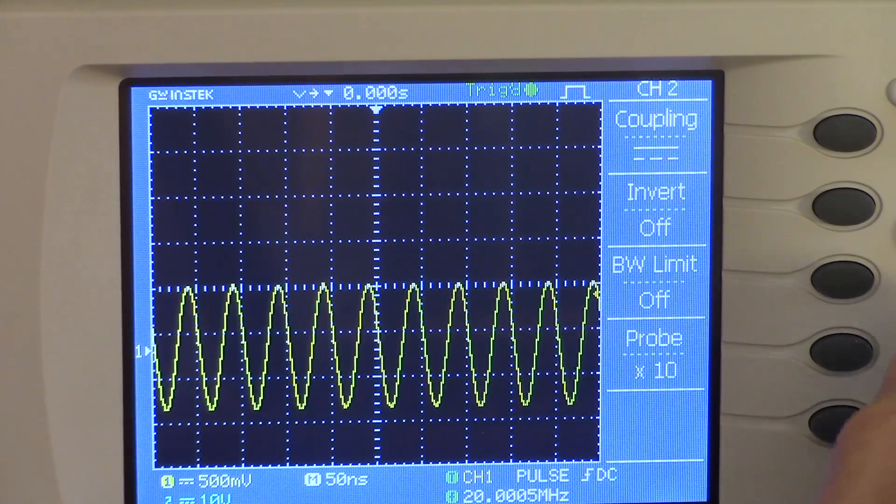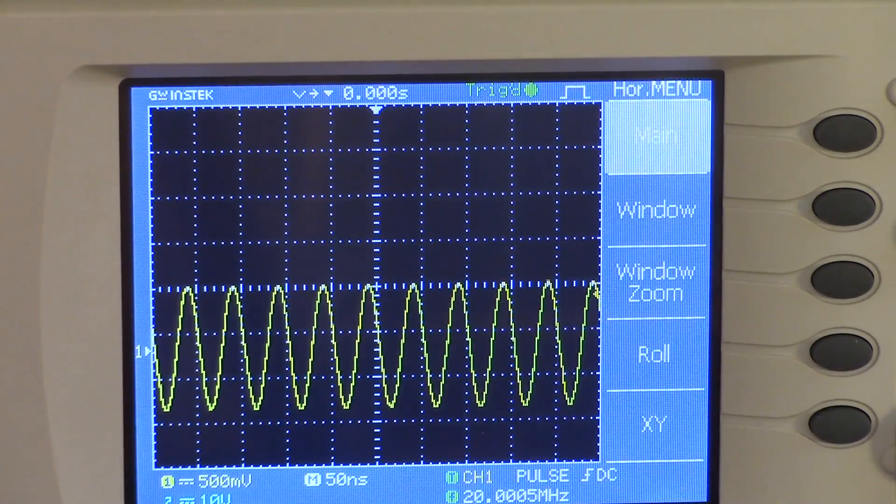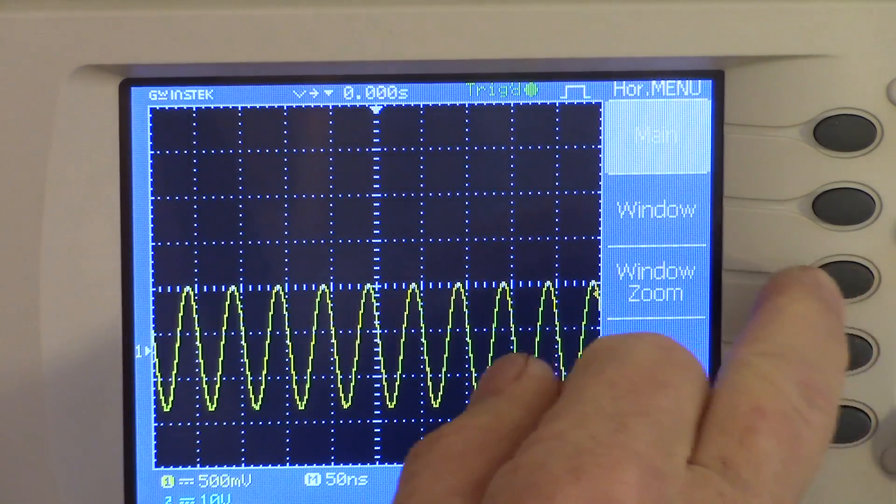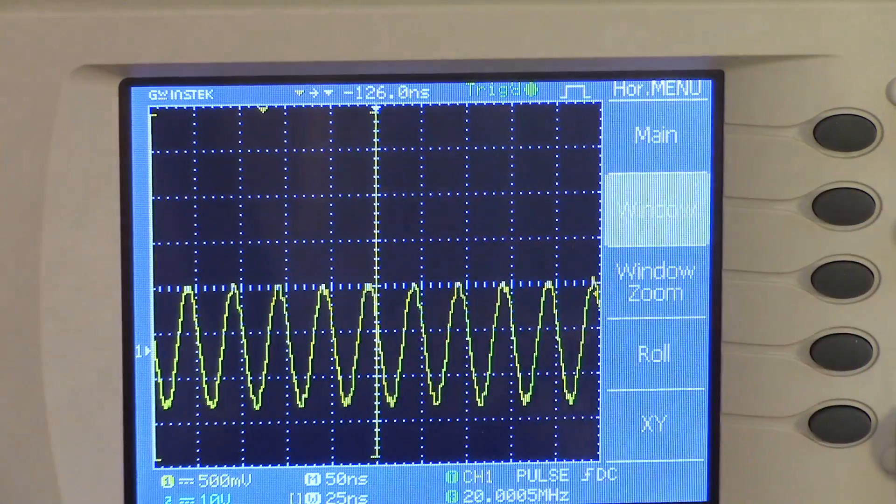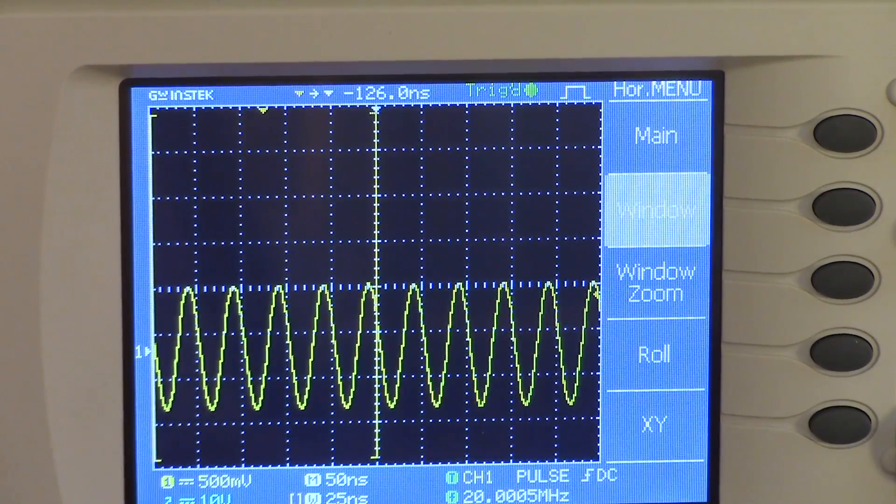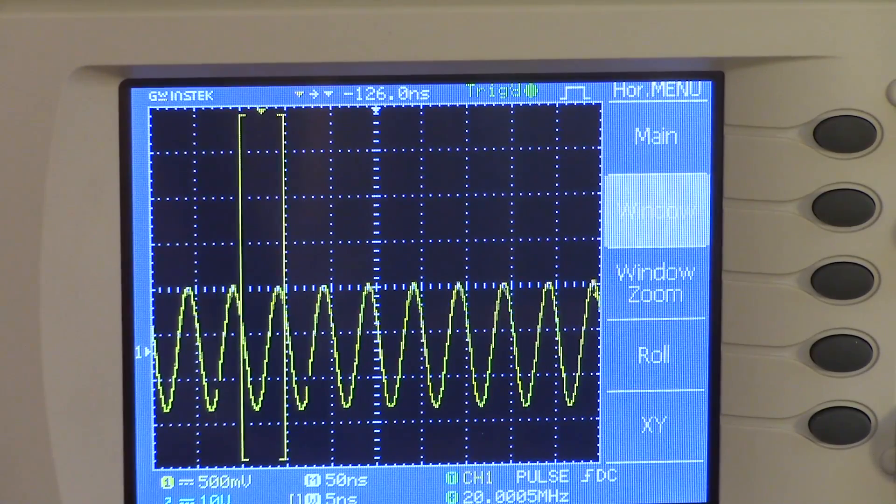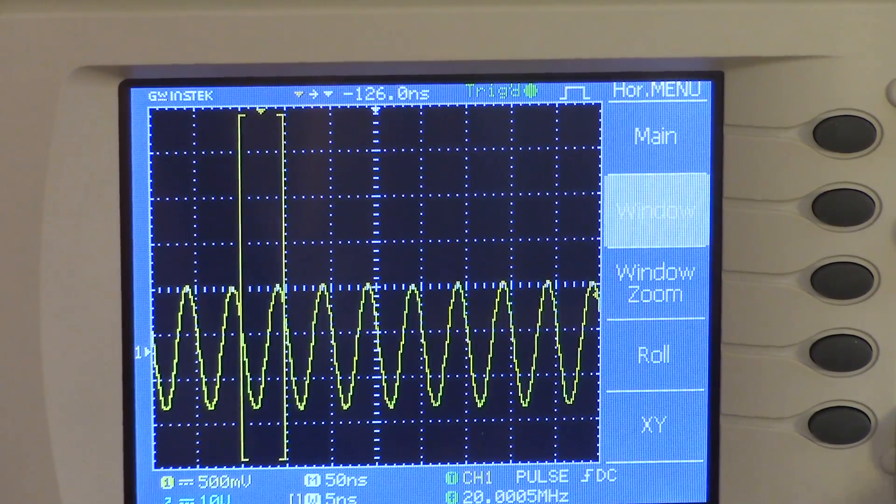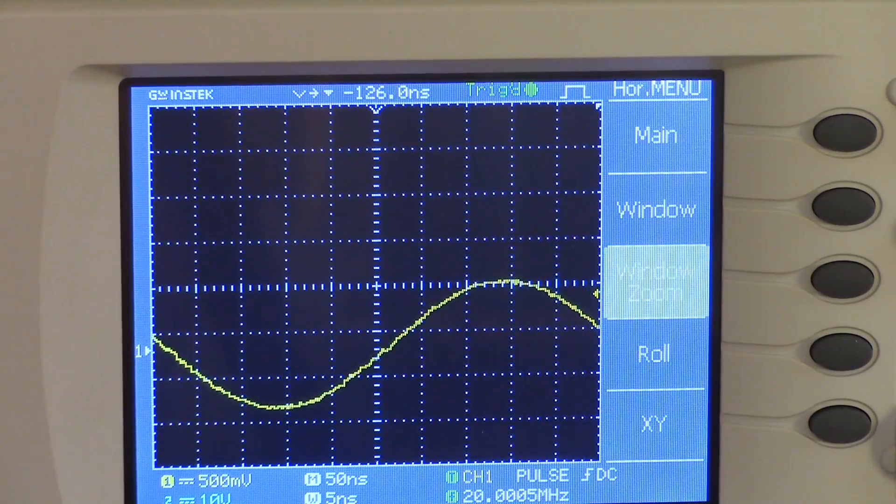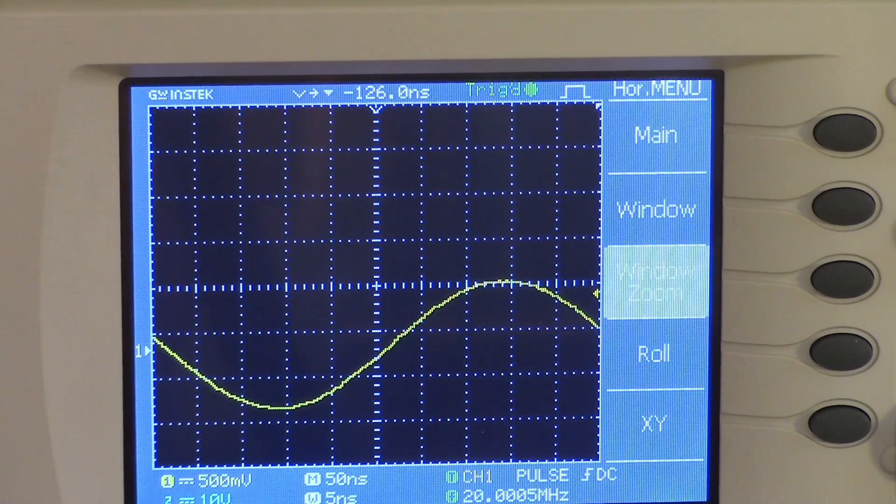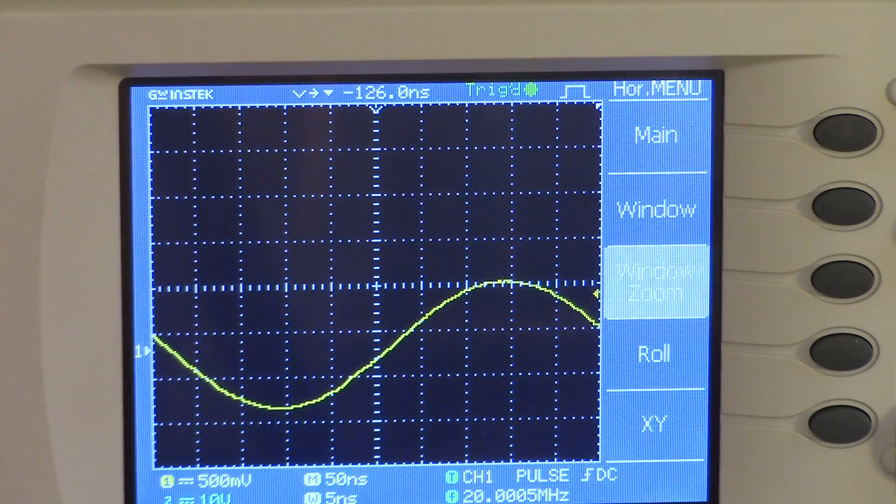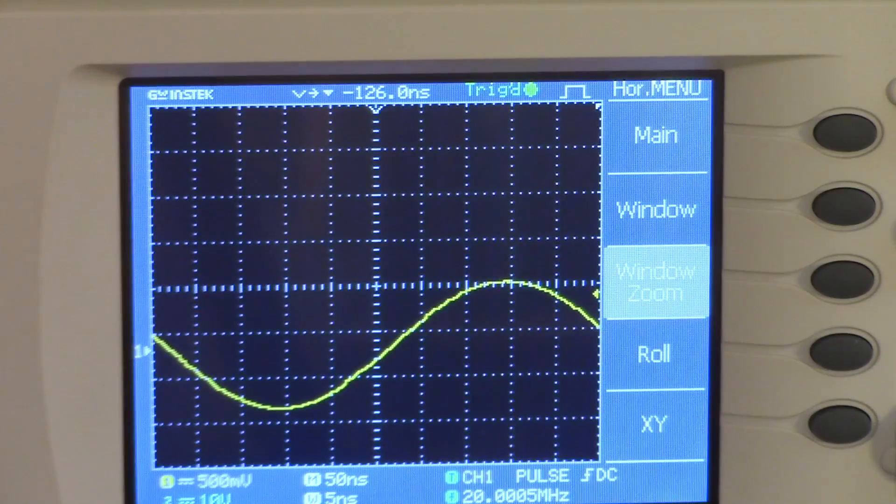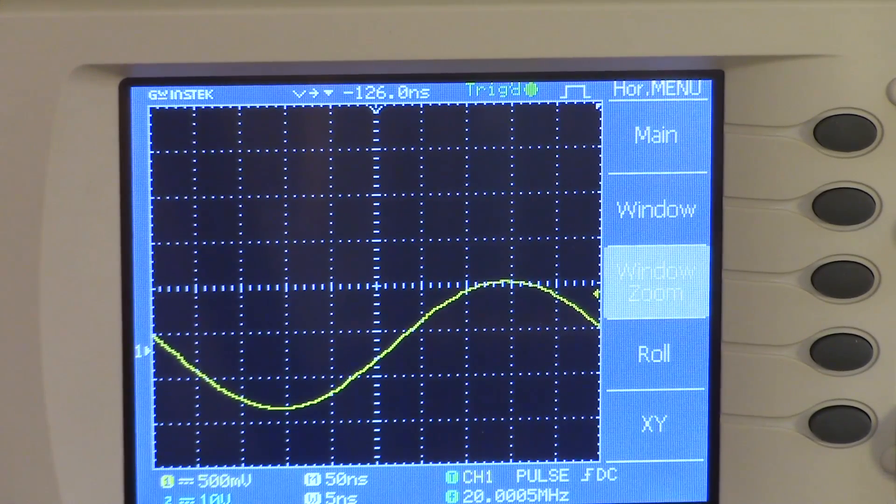It's got a nice zoom feature, which is really easy to use. You just go to the horizontal menu and you say window to select a window, and you use the horizontal knob to create this variable size window you can see here. Then you press window zoom, and voila, that signal has exploded. Bear in mind, this does not work in stop mode. It only works when the scope is acquiring signals.